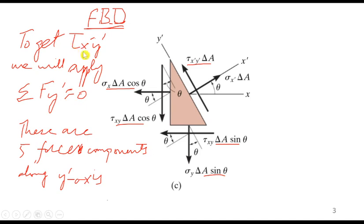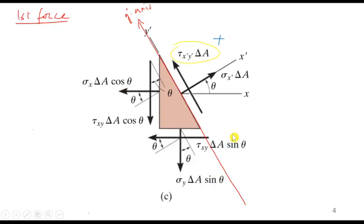As we did in the previous lecture, the same procedure will apply here. To get tau_x'y', we will apply the summation of all forces along the y' axis equal to zero. There are five force components along the y' axis that will have an impact, underlined one through five.